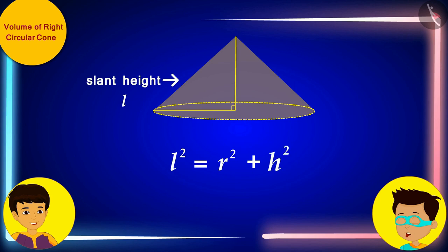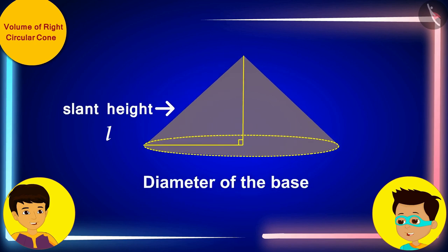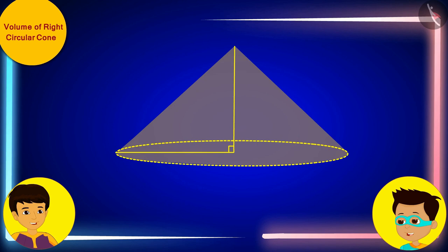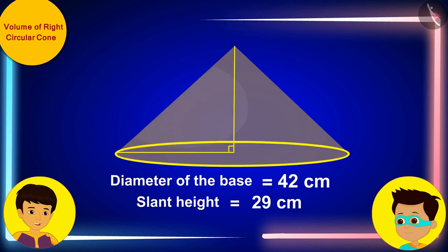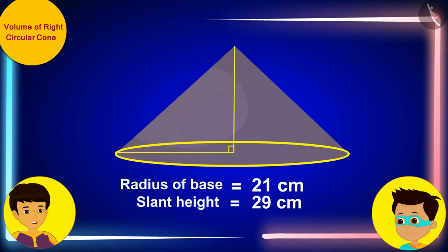Oh yes! And we can measure the diameter of the base of this conical sand pile and also the slant height. Let me quickly measure them. The diameter of the base of this conical sand pile is 42 centimeters and its slant height is 29 centimeters. Because the diameter is 42 centimeters, the radius of its base will be half of 42 centimeters, that is 21 centimeters.